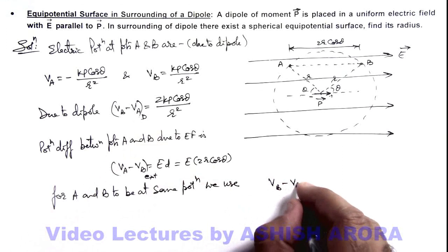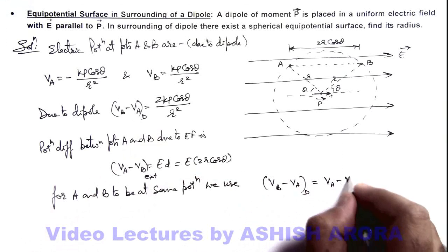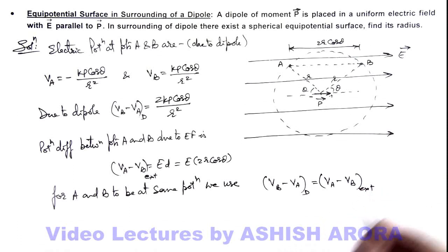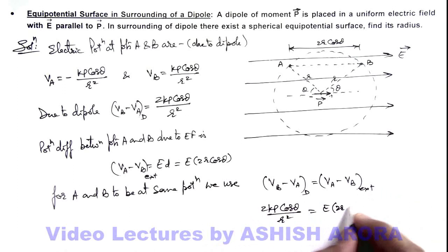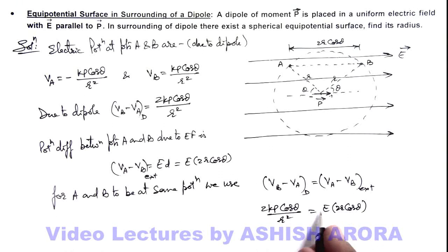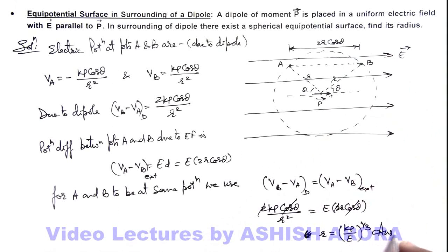V_B minus V_A due to the dipole must exactly compensate V_A minus V_B due to the external electric field. Equating the two: 2·k·p·cos(theta) / r² = E multiplied by 2·r·cos(theta). The 2·cos(theta) cancels out, giving E = 2kp / r³. Solving for the radius r, we get r = (kp / E)^(1/3), that is the cube root of kp/E — which is the answer to this problem.